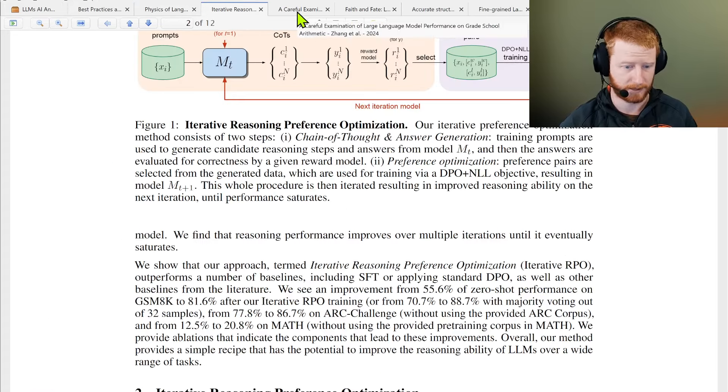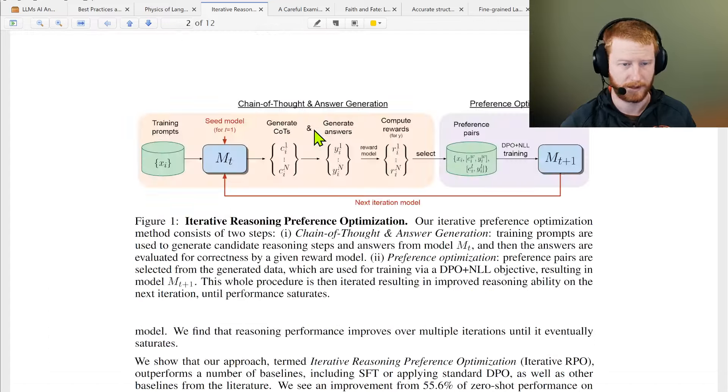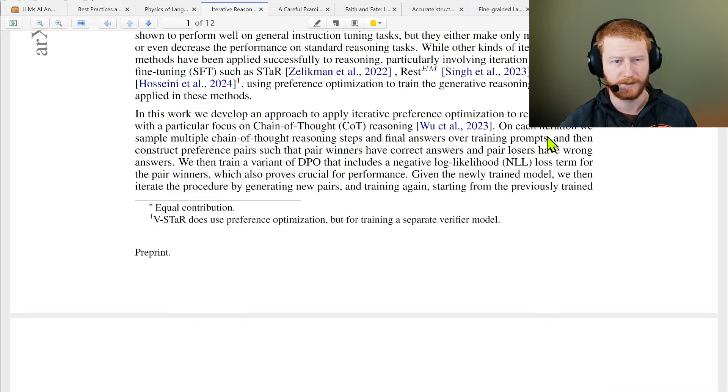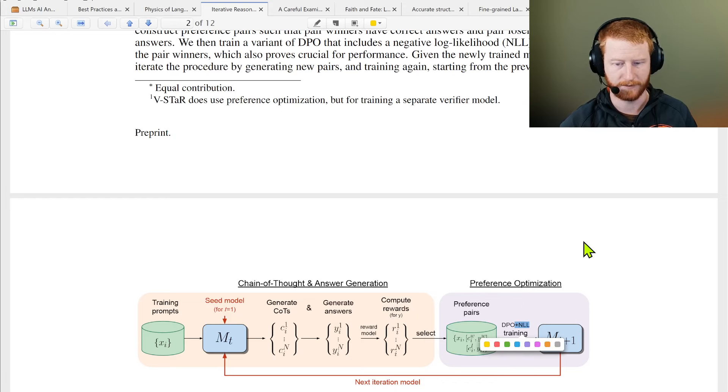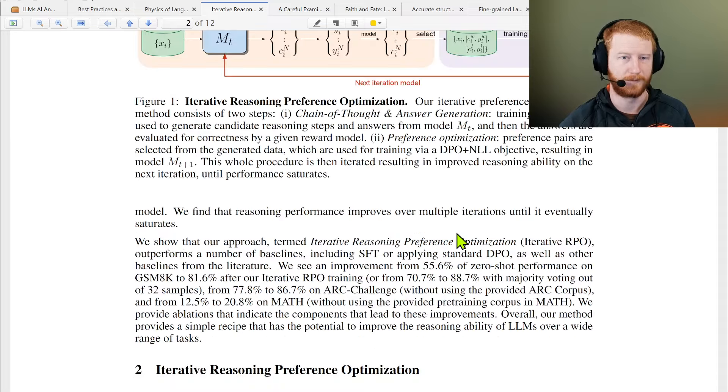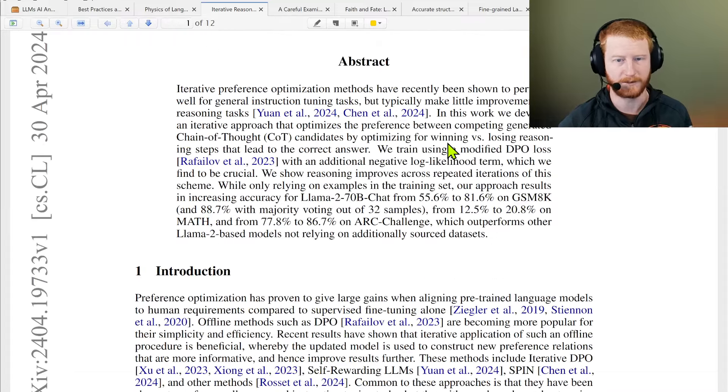Iterative Reasoning Preference Optimization feels like another one of the same. Get some training prompts, got a model, I generate some chains of thought and answers, compute the rewards, then get my preference pairs and do DPO. I think this paper was cool because they said you should also do a normal negative log-likelihood, the normal language modeling objective, as well as the DPO objective. Then rinse and repeat, do this iteratively as well. Maybe it's getting the previous one and this one confused, but lots and lots along this similar idea.